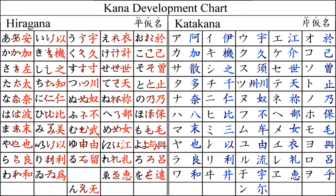Wo is preserved only in a single use, as a grammatical particle, normally written in hiragana. Si, ti, tu, hu, yi, we, and wo are often romanized respectively as shi, chi, tsu, fu, i, e, and o instead, according to contemporary pronunciation.